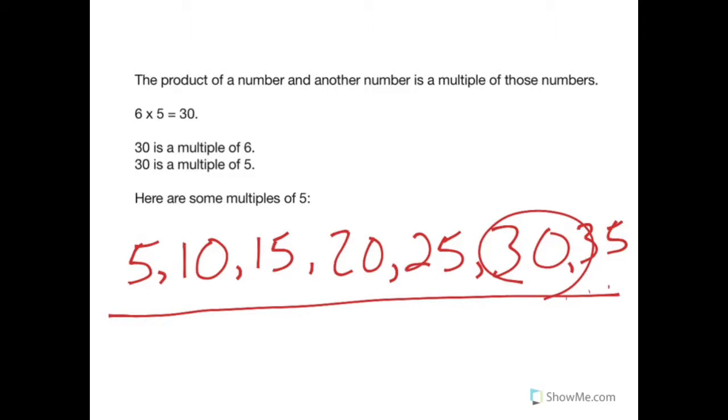In the case of our example, thirty is also a multiple of six. Because you could do six times one is six. Six times two is twelve. Six times three is eighteen. Six times four is twenty-four. Six times five is thirty. So that's a multiple that they both have in common.